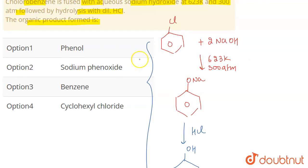So the organic product which is finally formed is phenol. So the correct answer is option one.